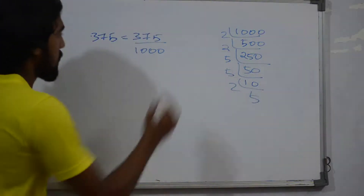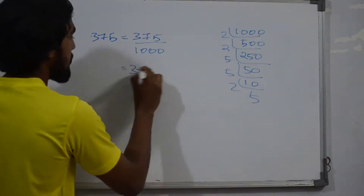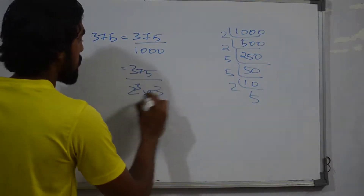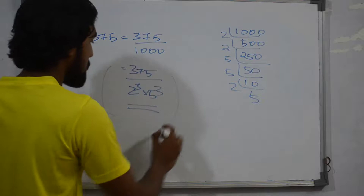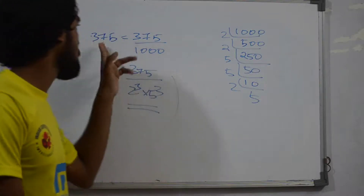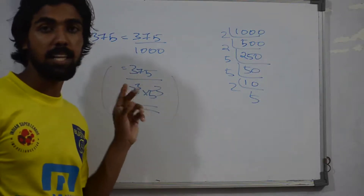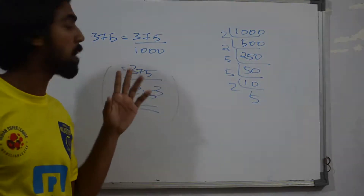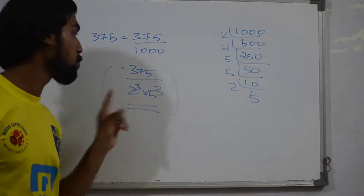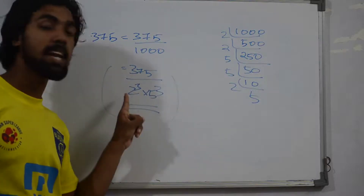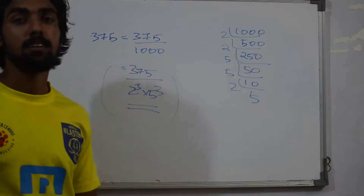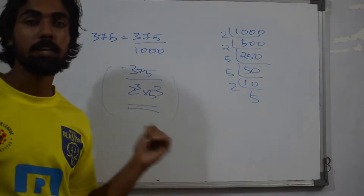For example, 375 expressed using 2 cubed into 5 cubed in order to formulate it. If we have a rational number with a terminating decimal, the denominator q will always be in the form of 2 raised to n and 5 raised to m. That is Theorem 1.5 from the textbook in the last section.